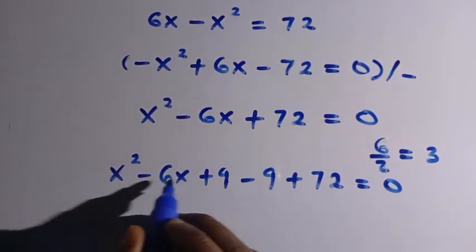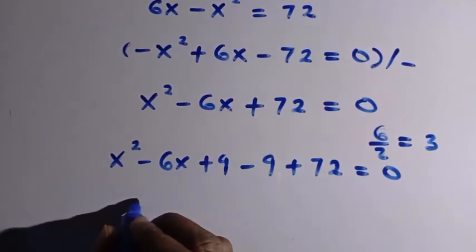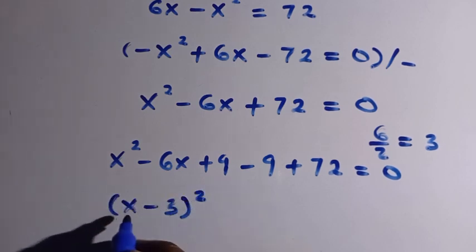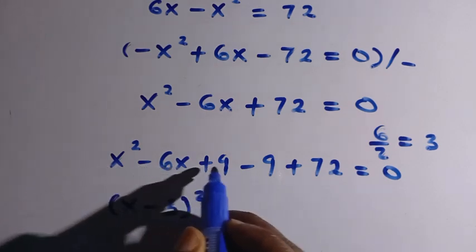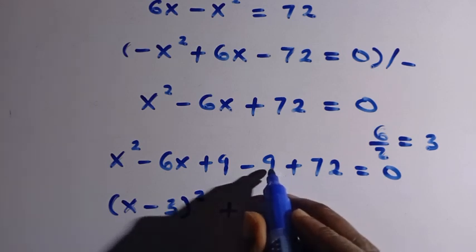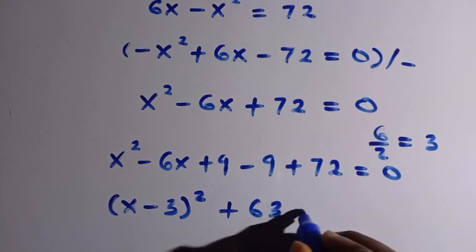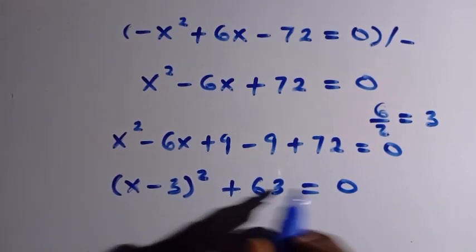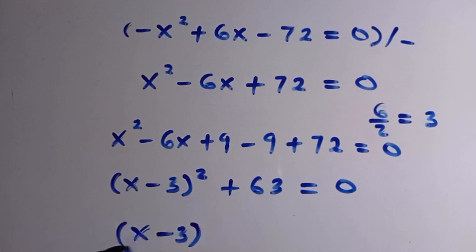When we combine x squared minus 6x plus 9 together, this gives us (x minus 3) all squared, because when we expand (x minus 3)², we get x squared minus 6x plus 9. Then minus 9 plus 72 gives us 63. So (x minus 3)² plus 63 equals 0. Taking 63 to the other side, we have (x minus 3)² equals minus 63.